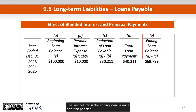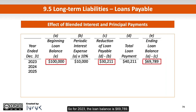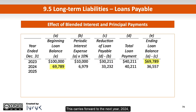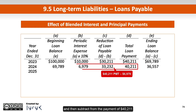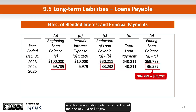The last column is the ending loan balance after the principal reduction is factored into the loan balance. So for 2023, the loan balance is $69,789. This carries forward to the next year, 2024, with a beginning loan balance equal to the ending loan balance at the end of 2023 of $69,789, which we multiply by the 10% interest to determine the interest expense to be $6,979, and then subtract from the payment of $40,211 to determine the principal reduction of $33,232, resulting in an ending balance of the loan at the end of 2024 of $36,557.